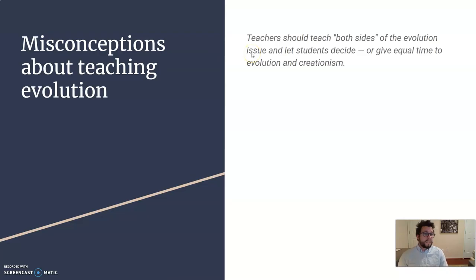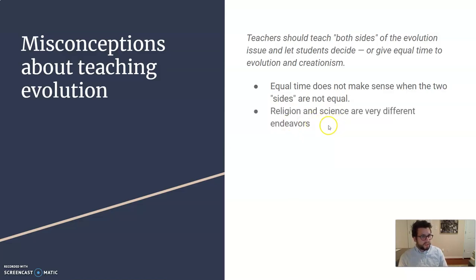And misconceptions about teaching evolution. So, teachers should teach both sides of evolution issue and let the students decide. Well, there's a problem here. Equal time does not make sense if the two sides are not equal. Again, evolution and creationism in the realm of science are not supported by the same amount of evidence. Religion and science are very different endeavors. And science is going to be in a science classroom.